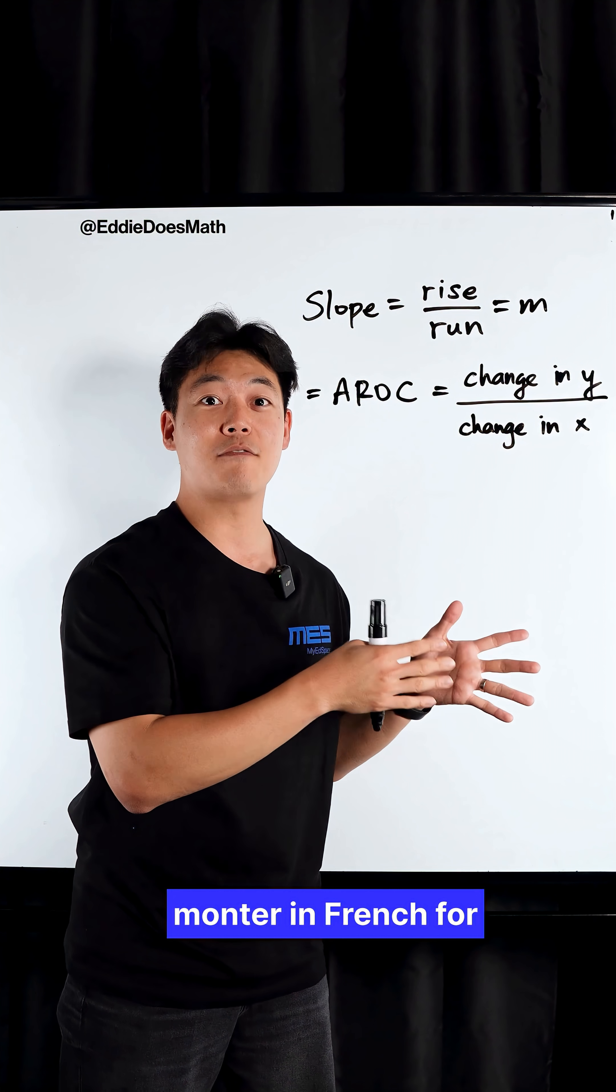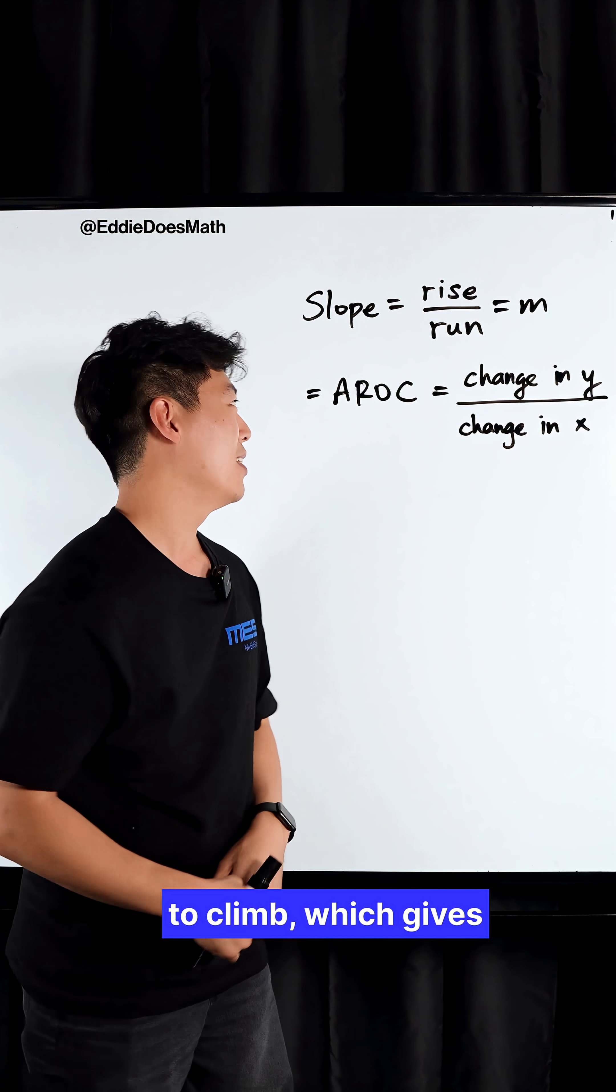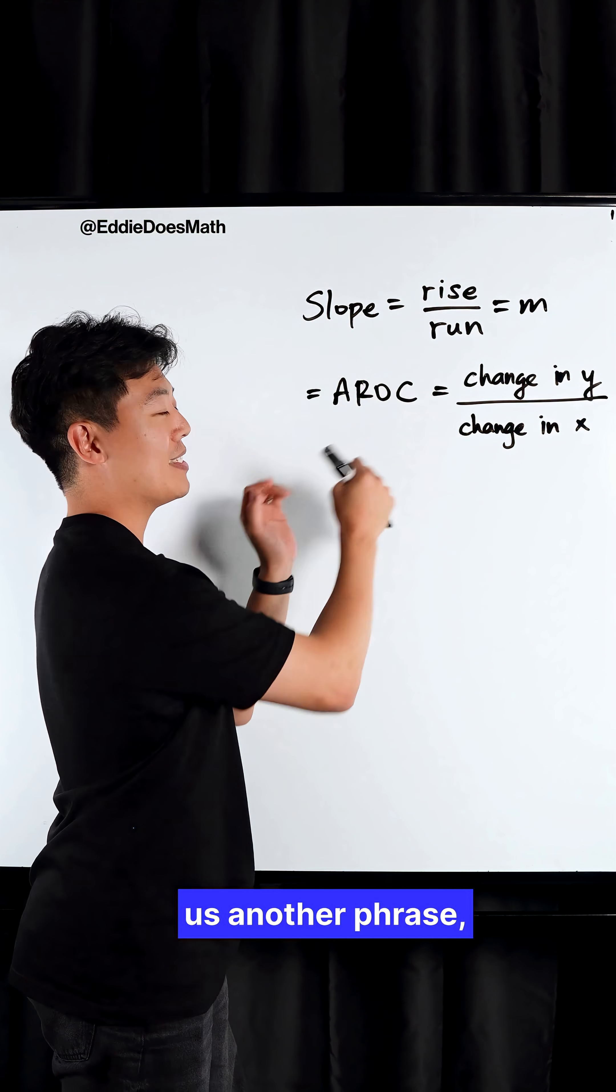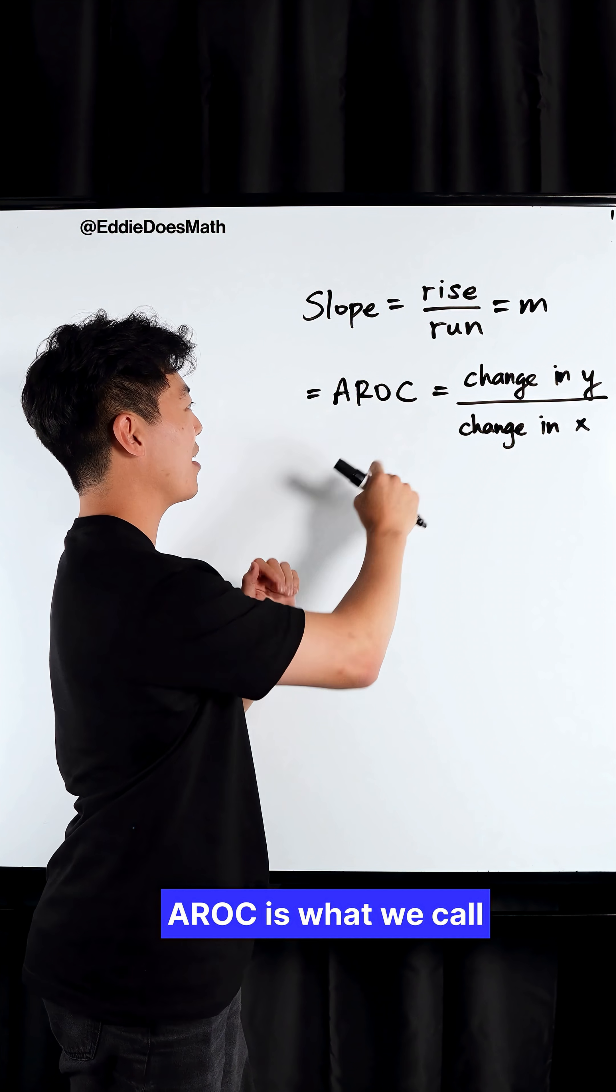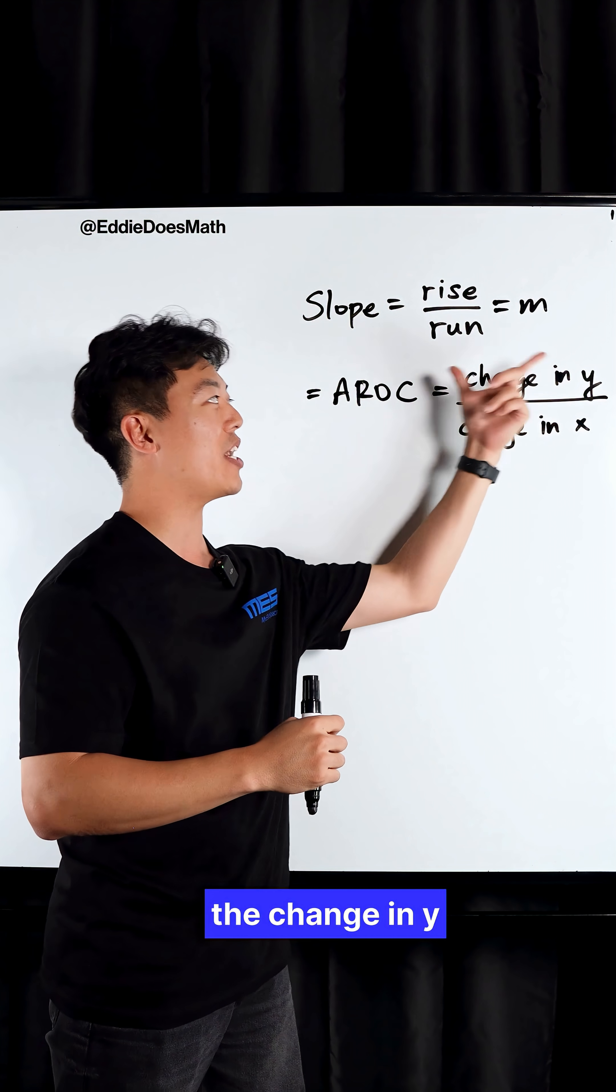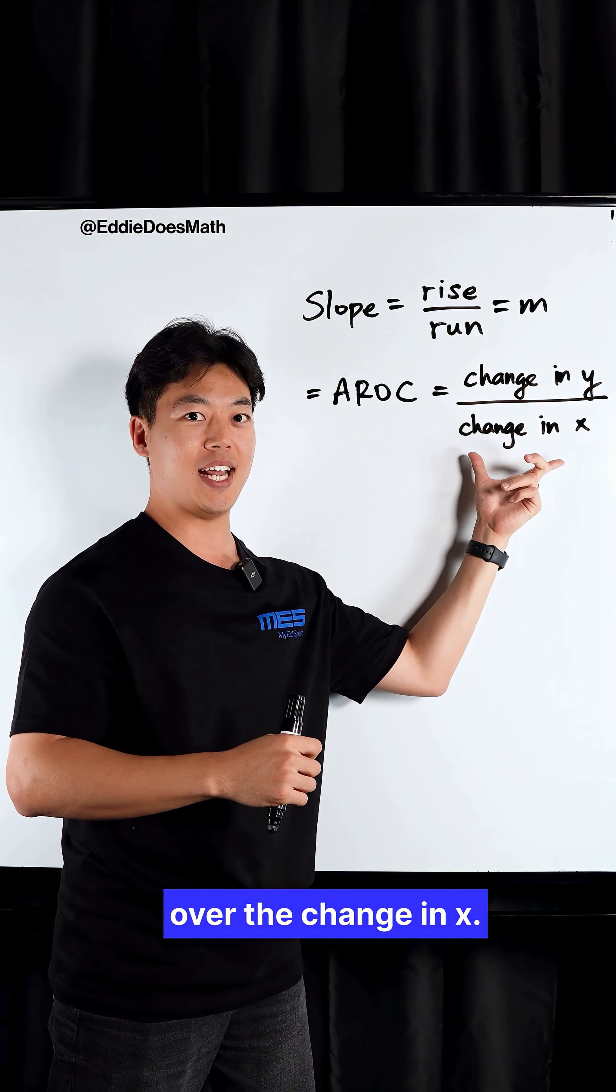M stands for monter in French for to climb, which gives us another phrase, average rate of change. AROC is what we call it, and that equals the change in Y over the change in X.